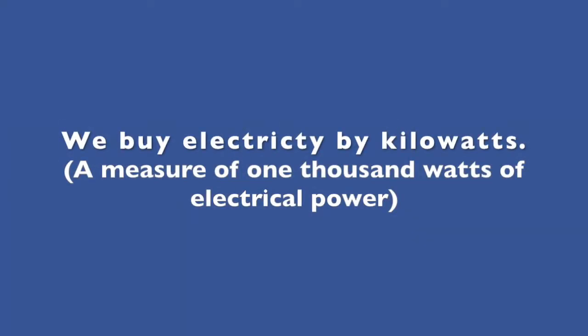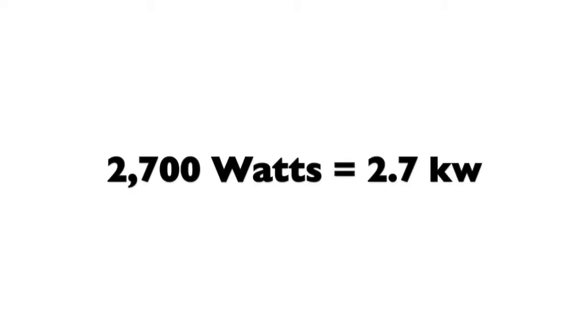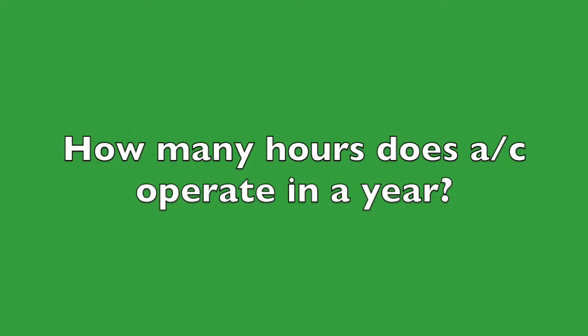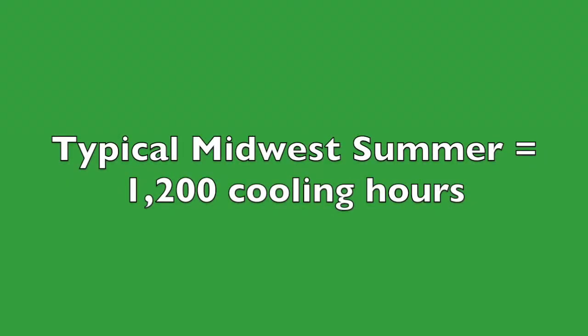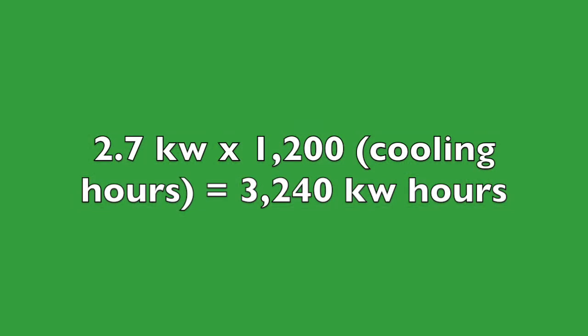Now, when we use that to determine how much it's going to cost to operate the air conditioner, we buy our electricity by kilowatts — thousands of watts. So that's 2.7 kilowatts of electricity. If we knew how many hours our air conditioner operated in a year, we could convert it to kilowatt hours, and that's how we buy our electricity. I'm in Kansas City, and on average a typical summer is 1,200 cooling hours. You take my 2.7 kilowatts times 1,200 hours, that's 3,240 kilowatt hours to operate my air conditioner for an entire summer.